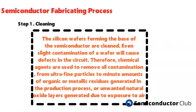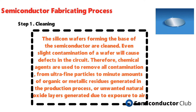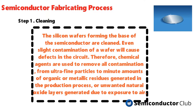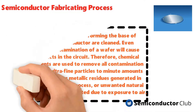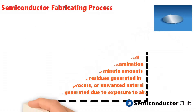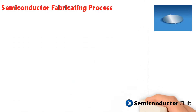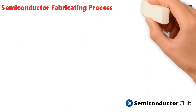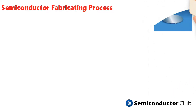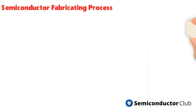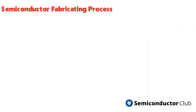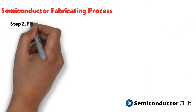The fabrication process begins with cleaning. The silicon wafers forming the base of the semiconductor are cleaned, as even slight contamination will cause defects in the circuit. Chemical agents are used to remove all contamination — from ultra-fine particles to minute amounts of organic or metallic residues, as well as unwanted natural oxide layers generated due to exposure to air.